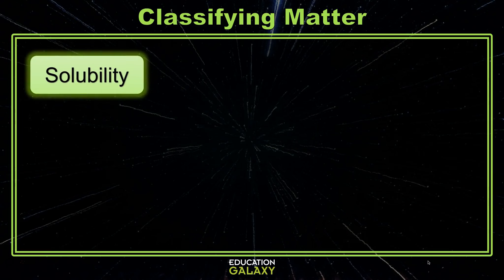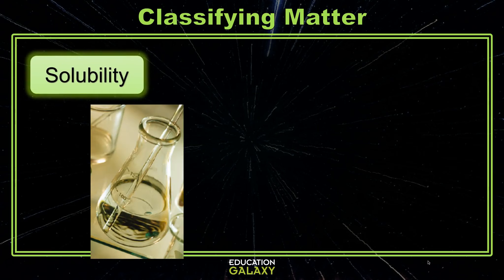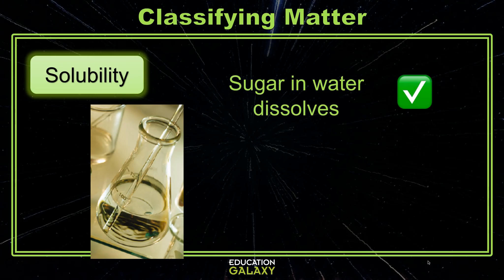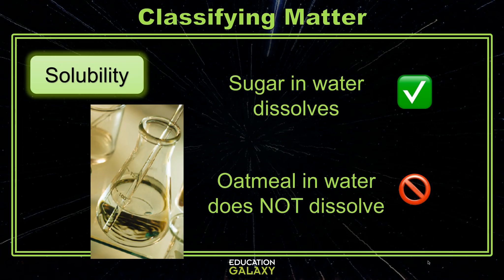Solubility is whether or not one substance will dissolve in another substance. For example, sugar will dissolve in water, meaning that you can mix it in and it seems to disappear, but really the particles get smaller and are just suspended in the water. Other things like oatmeal will not dissolve in water.